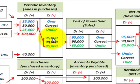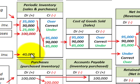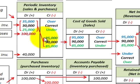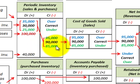To determine the inventory charge against sales of $200,000, we take the beginning inventory, add purchases, and subtract ending inventory — that's the periodic method. With the overvalued inventory of $35,000, the inventory charge is $95,000. The correct amount gives an inventory charge of $90,000. With undervalued inventory of $25,000, the inventory charge is $85,000. These amounts move directly into cost of goods sold.